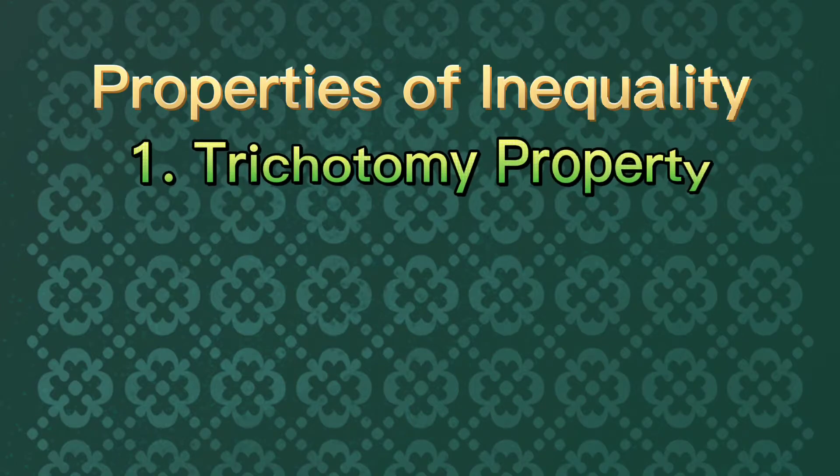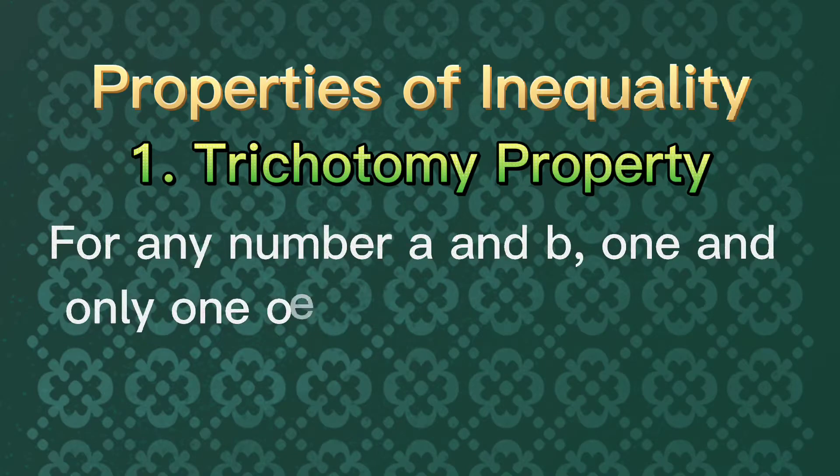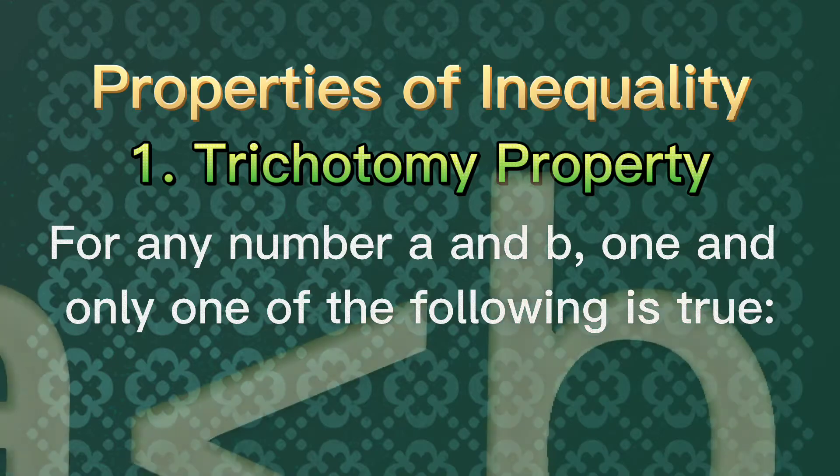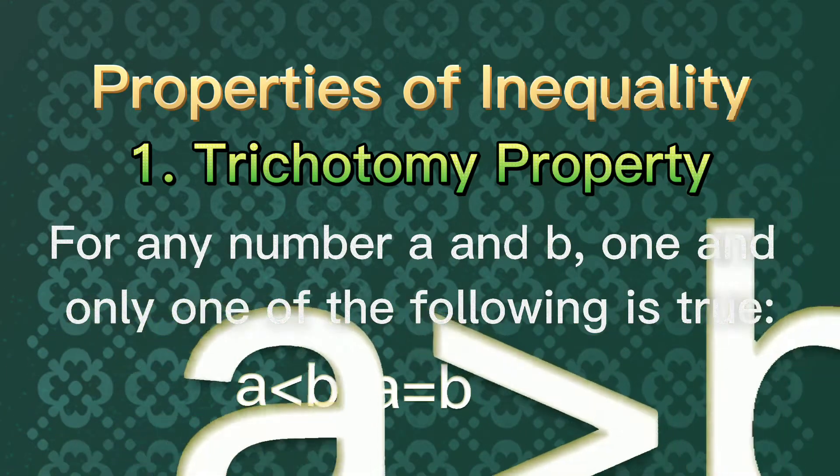The first property of inequality is called trichotomy property. For any number A and B, one and only one of the following is true: A is less than B, A is equal to B, and A is greater than B.